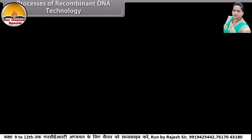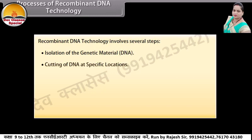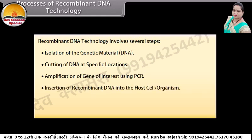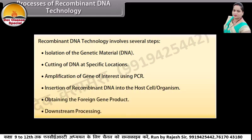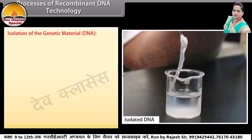Processes of recombinant DNA technology. Recombinant DNA technology involves several steps: isolation of the genetic material DNA, cutting of DNA at specific locations, amplification of gene of interest using PCR, insertion of recombinant DNA into the host cell or organism, obtaining the foreign gene product, and downstream processing.